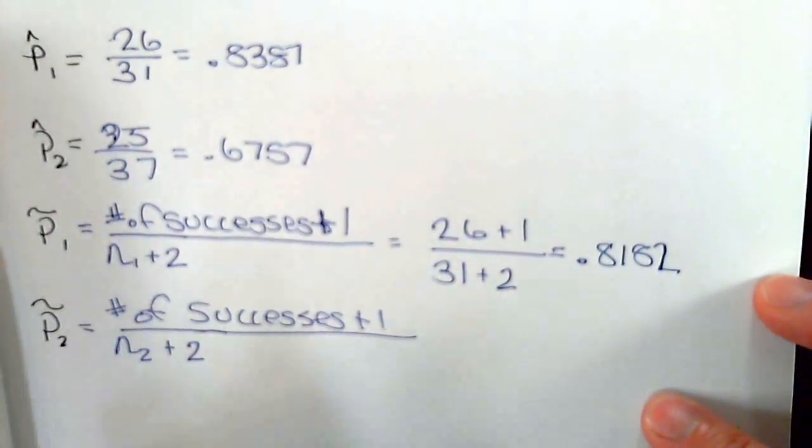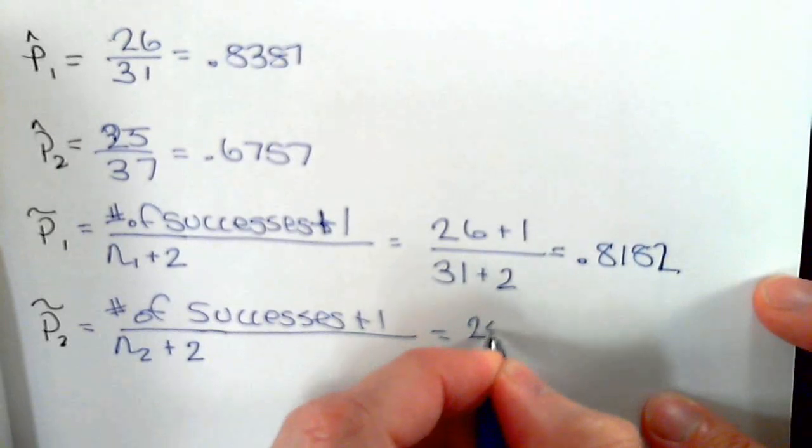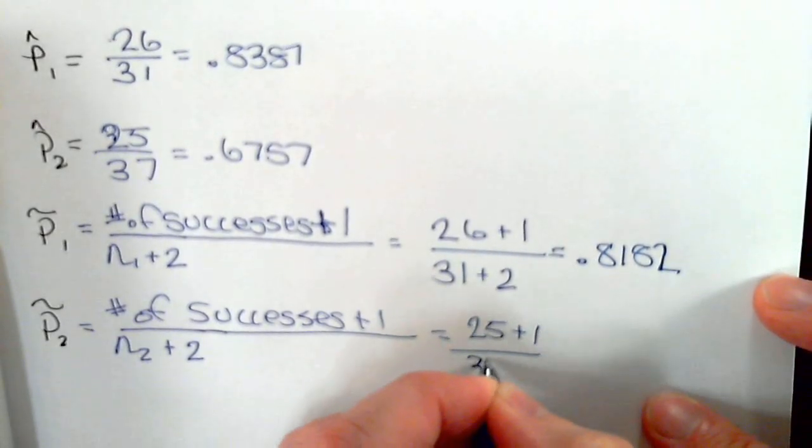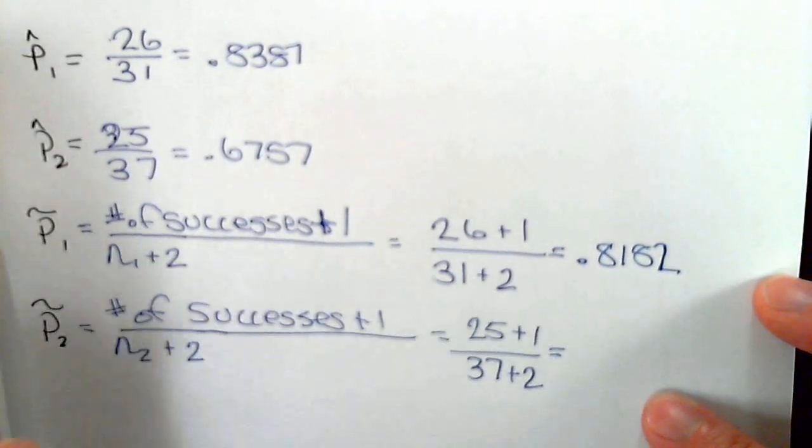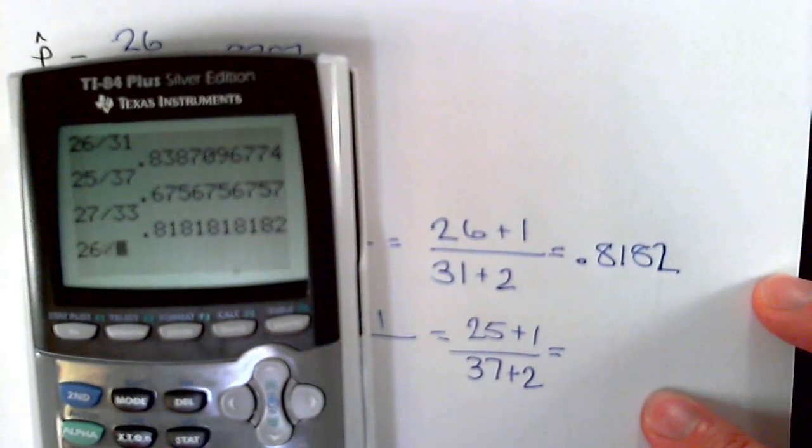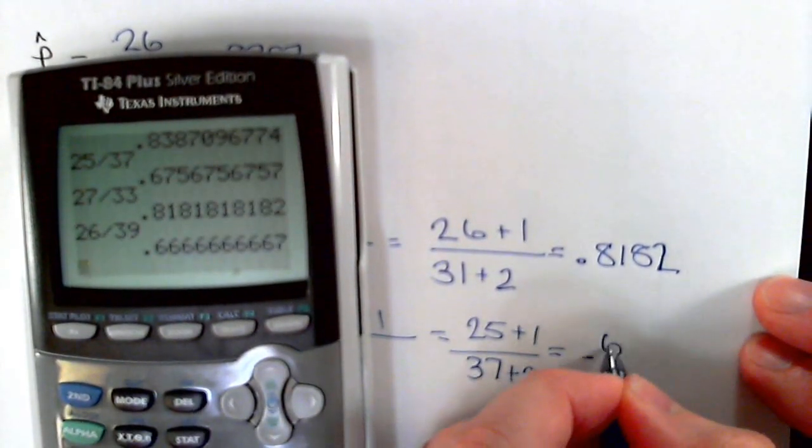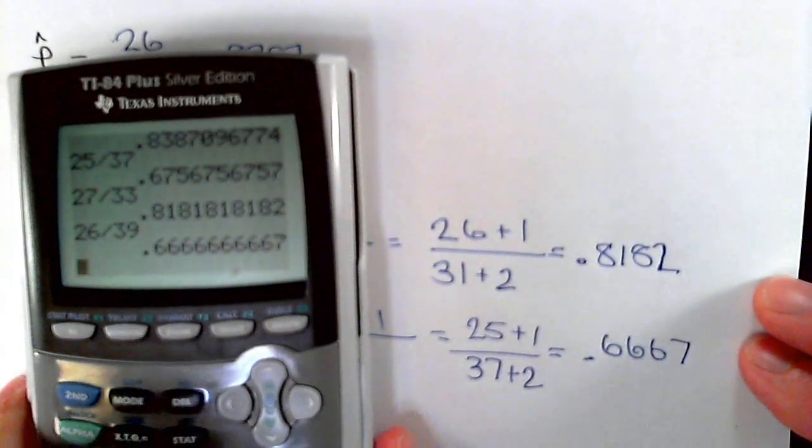And then for the second sample, it's going to be 25 plus 1 over 37 plus 2, which is 26 divided by 39, equals 0.6667.